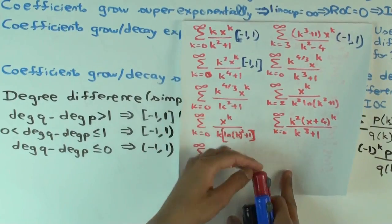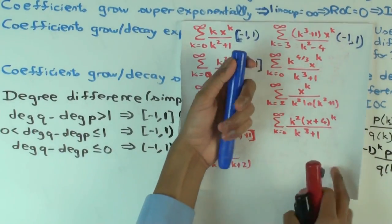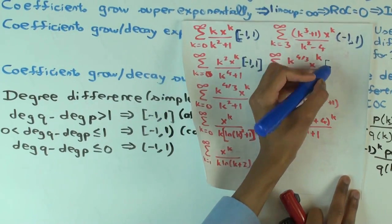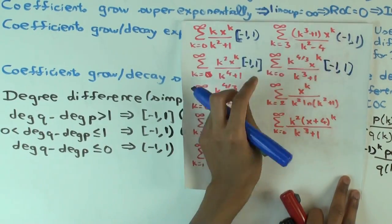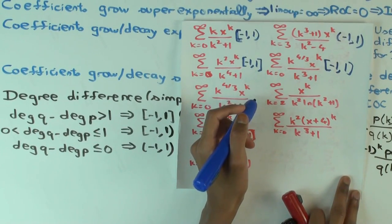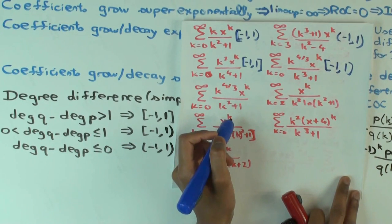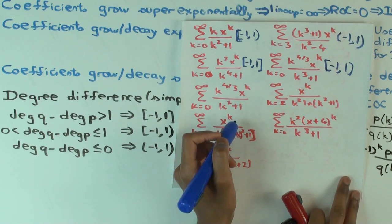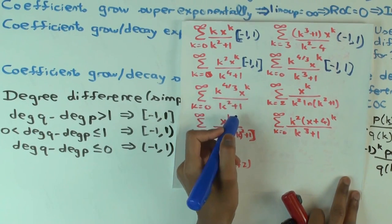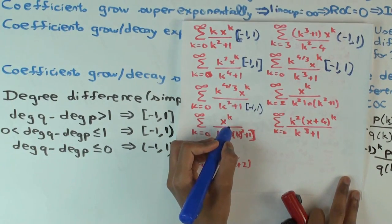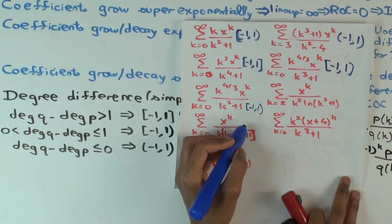The fourth one: these aren't polynomials but the same rule applies. The degree difference is more than one, so it's closed on both ends. The fifth example: the degree difference is two minus four, so that's two thirds — between zero and one. So what do you get? It's closed on the left and open on the right, with conditional convergence at minus one.